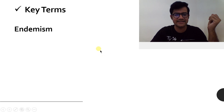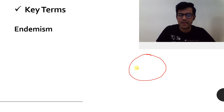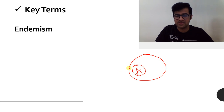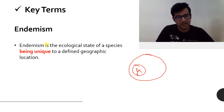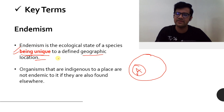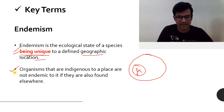Now let's talk about certain key terms. The first key term is endemism. Imagine this is an area and species A lives in this area only — not anywhere else on this planet. So this species is endemic. Endemism is an ecological state of a species being unique to a defined geographical location. In case this species A is present anywhere else on this planet, it will not be considered endemic.